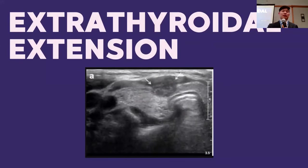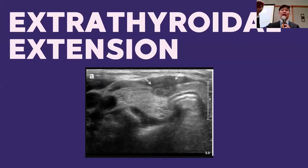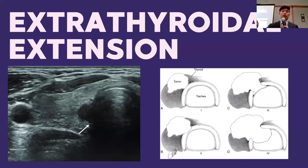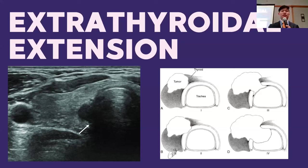Another reason for surgically advanced disease is extrathyroidal extension — growth of the tumor outside of the thyroid. You can see the trachea, the gray thyroid wrapping around it, and the tumor with the top of it growing into the muscle that lies right on top of the thyroid. This is a very clear way that ultrasound before surgery lets us know this is more advanced disease. It can also grow back toward the trachea, and a very flat imprint against the trachea tells us there may be some extension of the tumor onto the trachea itself.